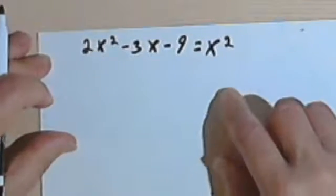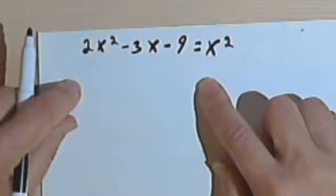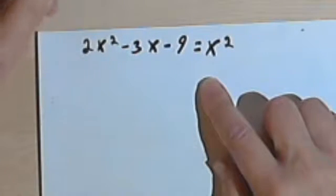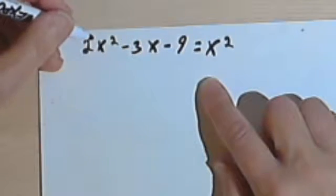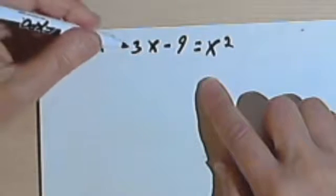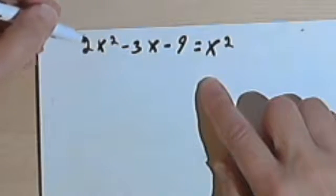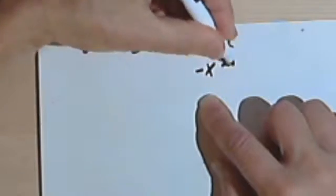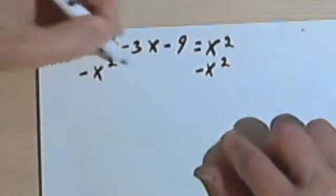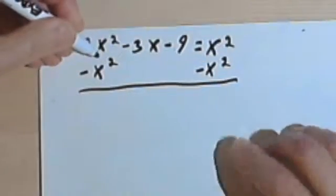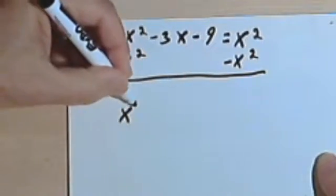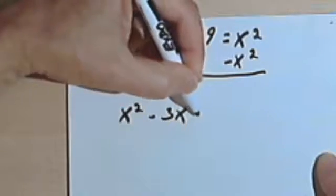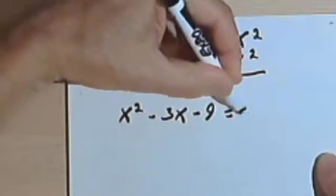Here I've got the equation 2x² - 3x - 9 = x². So the first thing we do if we want to solve this is get all of the terms on one side of the equation. So I'm going to subtract x² from both sides. And that'll leave me with x² - 3x - 9 = 0.